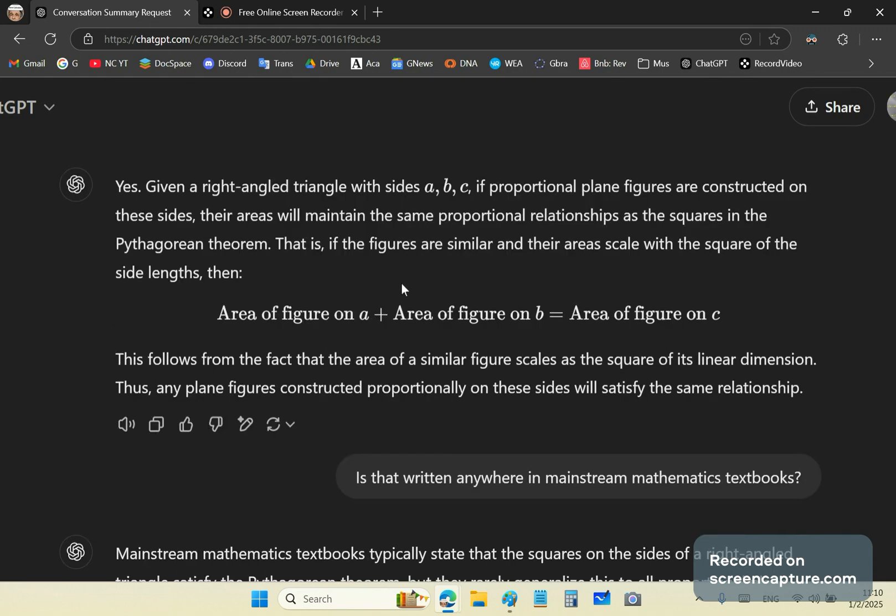And of course, ChatGPT agrees. And it says that the areas will maintain the same proportional relationships as the squares in the Pythagorean theorem. What does this mean?